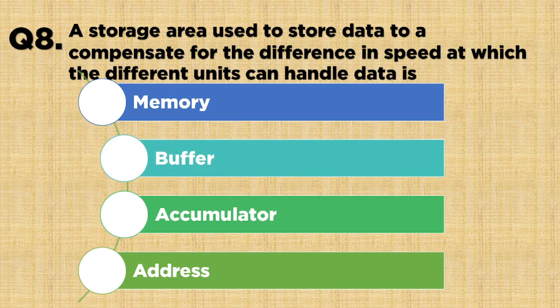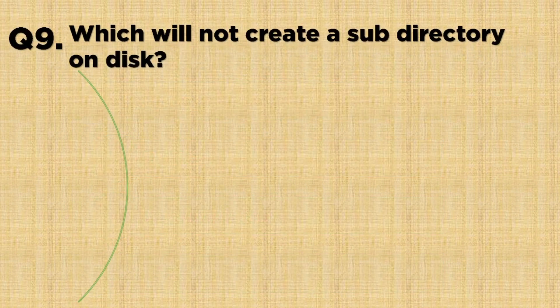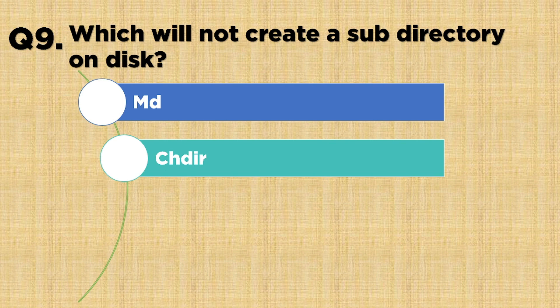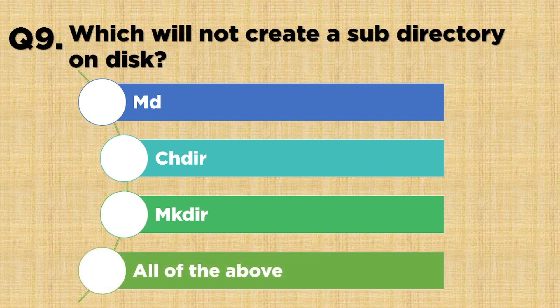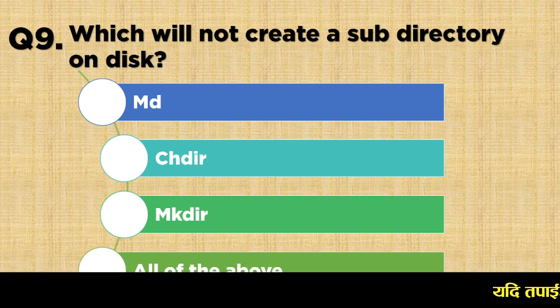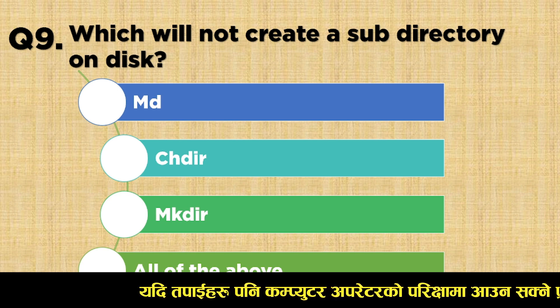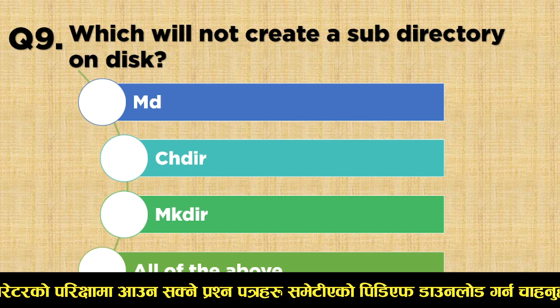Question number nine: which command will not create a directory on disk? Option A: MD, Option B: CHDIR, Option C: MKDIR, Option D: MKDIR variant. The correct answer is Option B: CHDIR (CHT).